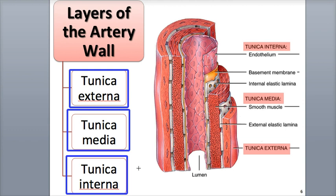The different types of blood vessels vary in the structure and arrangement of tissues within each of these three layers. This variation directly correlates with the specific functions of each blood vessel.